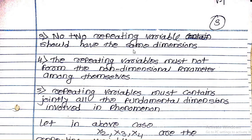Third criteria: no two repeating variables should have the same dimensions — we must avoid selecting variables that share the same dimensions. Fourth: the repeating variables must not form a non-dimensional parameter among themselves. If the selected repeating variables form a non-dimensional number amongst themselves, we should not select that group. Fifth: the repeating variables must jointly contain all the fundamental dimensions involved in the phenomenon.